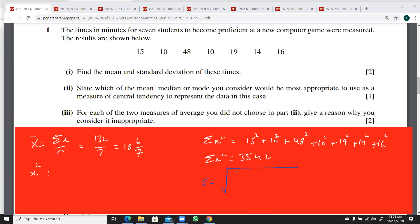Now we can find the standard deviation. That's going to be Σx squared over n minus the mean squared. So this is 3542 over 7, and I'll use this value, 132 over 7 squared.